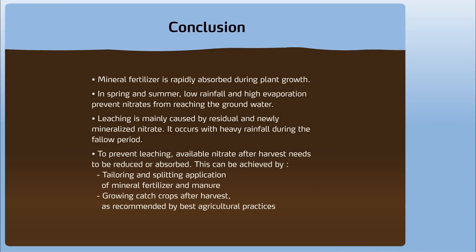Conclusion. Mineral fertilizer is rapidly absorbed during plant growth. In spring and summer, low rainfall and high evaporation prevent nitrates from reaching the ground water. Leaching is mainly caused by residual and newly mineralized nitrate. It occurs with heavy rainfall during the fallow period. To prevent leaching, available nitrate after harvest needs to be reduced or absorbed. This can be achieved by tailoring and splitting application of mineral fertilizer and manure, or by growing catch crops after harvest, as recommended by best agricultural practices.